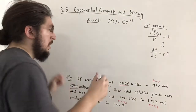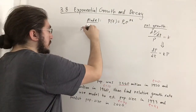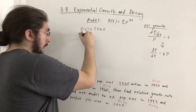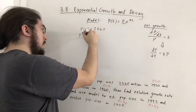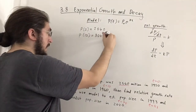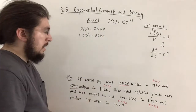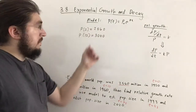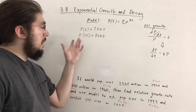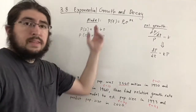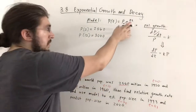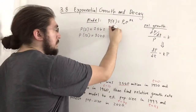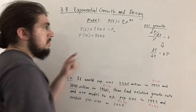The first two data points tell us P(0) = 2560 and P(10) = 3040 (in millions). After zero years the initial size is 2560, and after 10 years the population is 3040. Since P(0) is literally just P₀, all we need to do is find k.